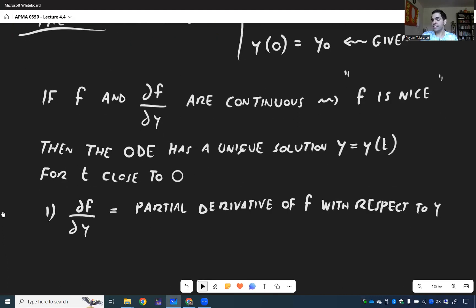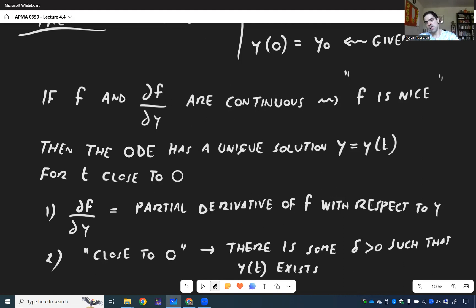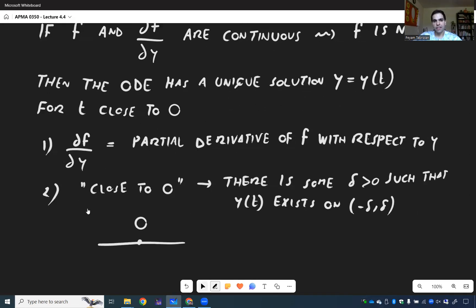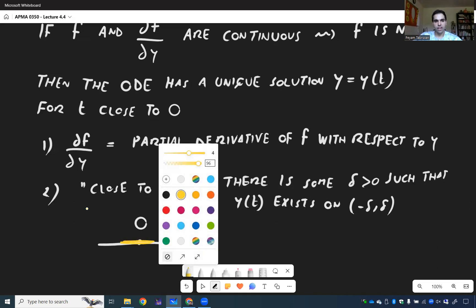And the next thing is, what does close to zero mean? Close to zero means we just have some wiggle room around zero for which there is a unique solution. So in other words, there is some delta positive such that there is a unique solution. So y of t exists on minus delta to delta. It's like an interval. And think of this being zero, and there's just some small region around zero for which we have a solution.